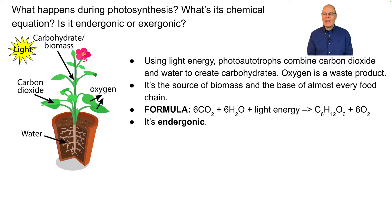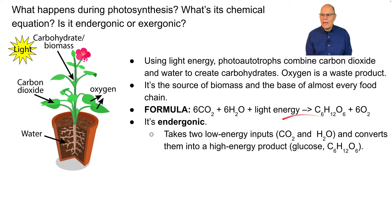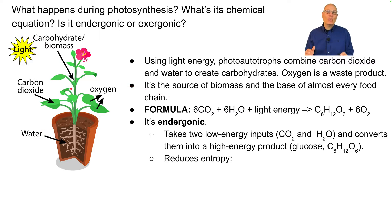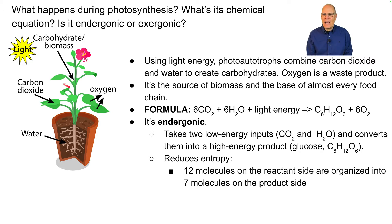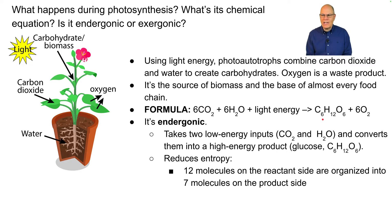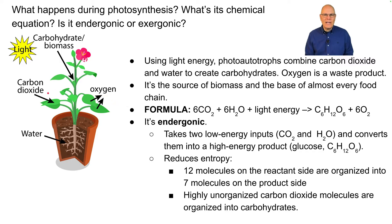This is an endergonic reaction for two reasons. First, it takes two low-energy inputs — carbon dioxide and water — and converts them into a high-energy product, glucose. Second, it reduces entropy, meaning it increases organization. There are 12 molecules on one side of the equation and only 7 on the other. Highly disorganized, diffuse carbon dioxide gas is made into solid matter — a huge decrease in entropy.